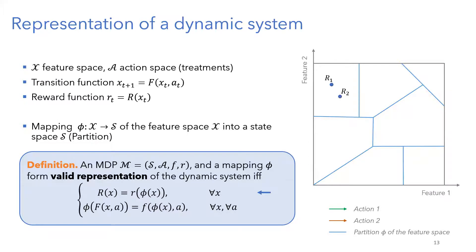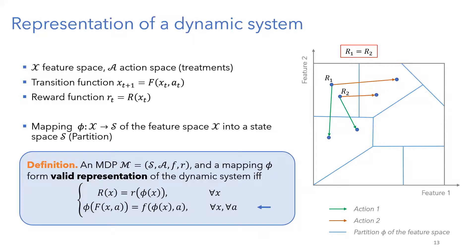The second condition: for every action — say the orange action — whenever two points in the same cluster take the same action, I want them to go to the same group in this clustering. Similarly for the green action: they transition to the same group. If I have a partition that verifies these two conditions, I call this a valid representation of the system, and it can be mapped into an MDP. Ideally, I want the most concise partition — with the least number of states — compressing all the information from the continuous system into a small partition.